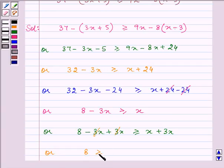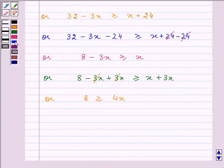8 is greater than equal to 4x. On dividing both the sides by 4, we have 2 is greater than equal to x, or we can write that x is less than equal to 2.